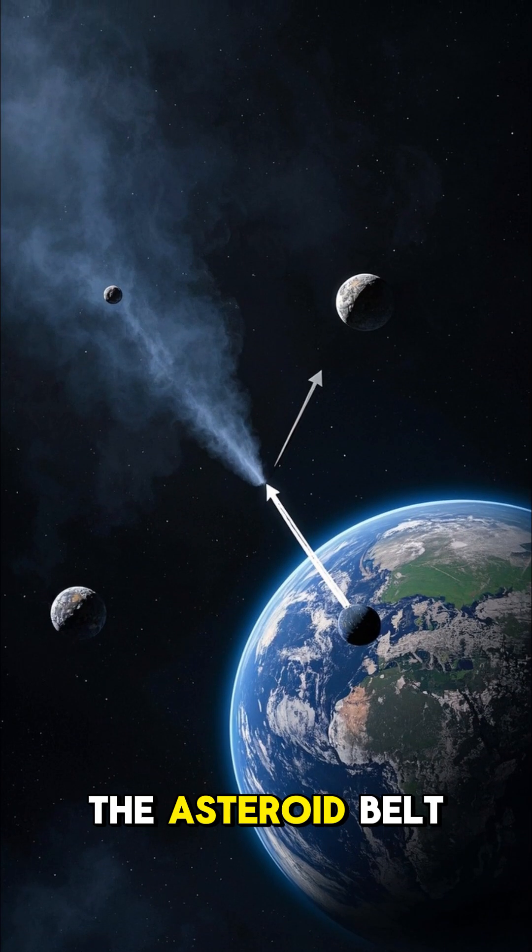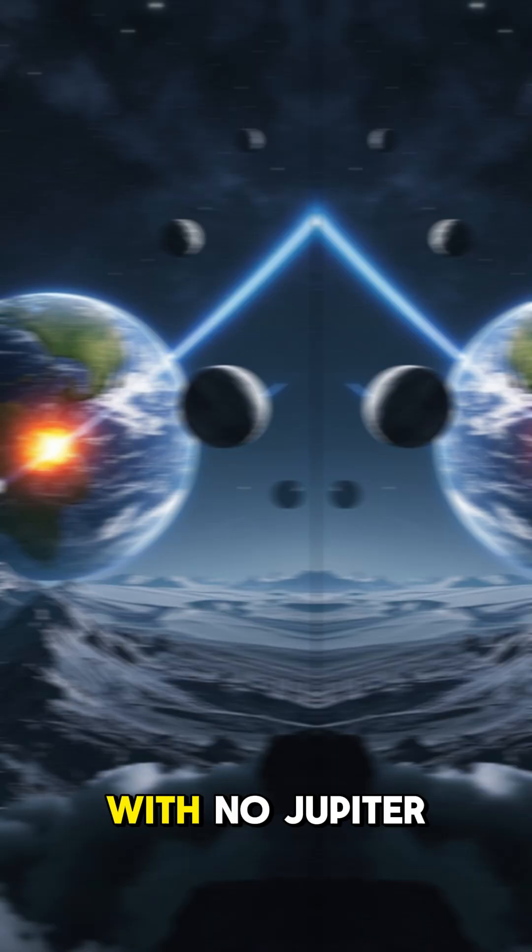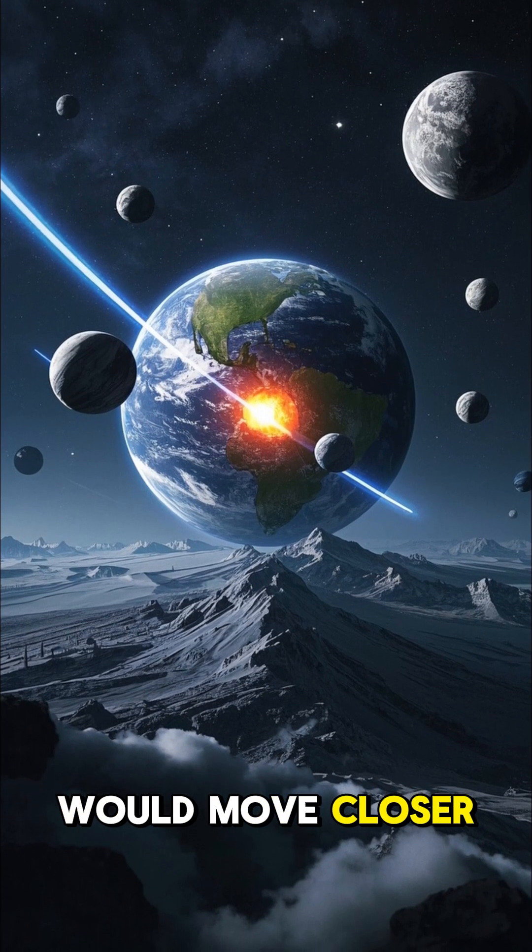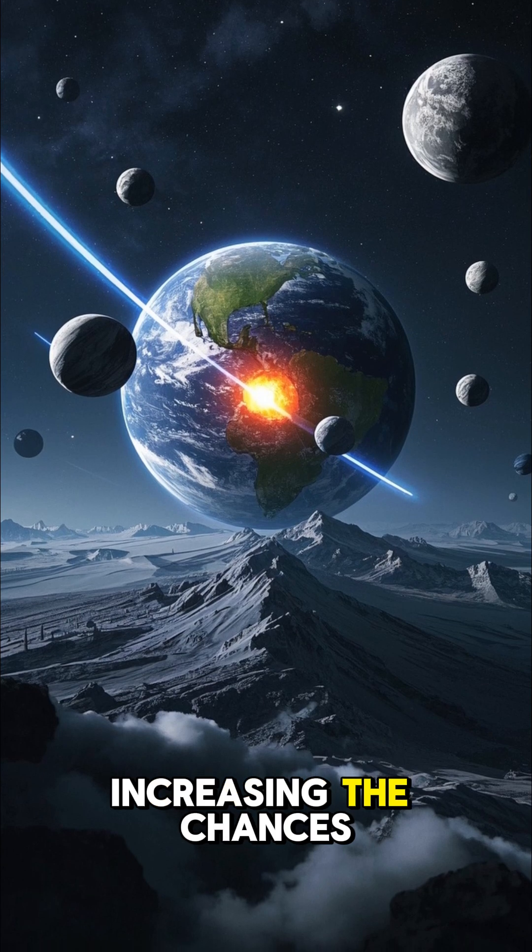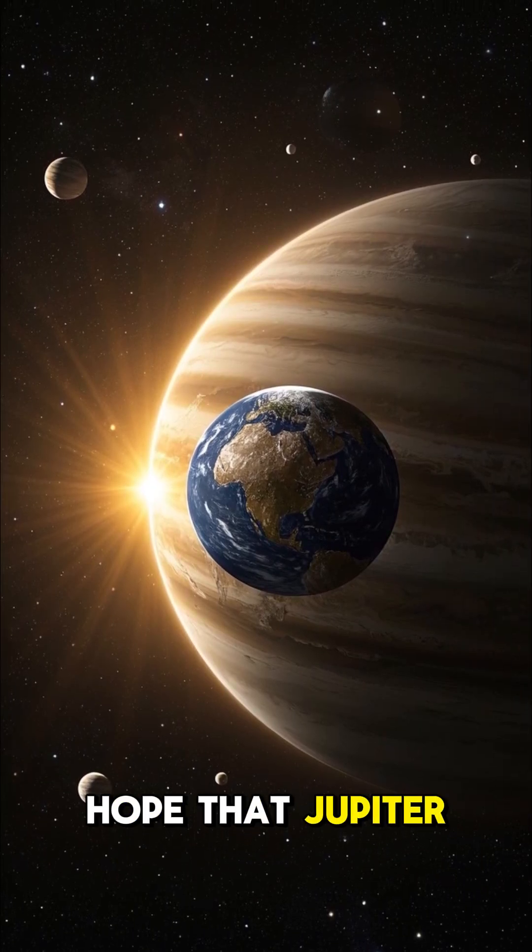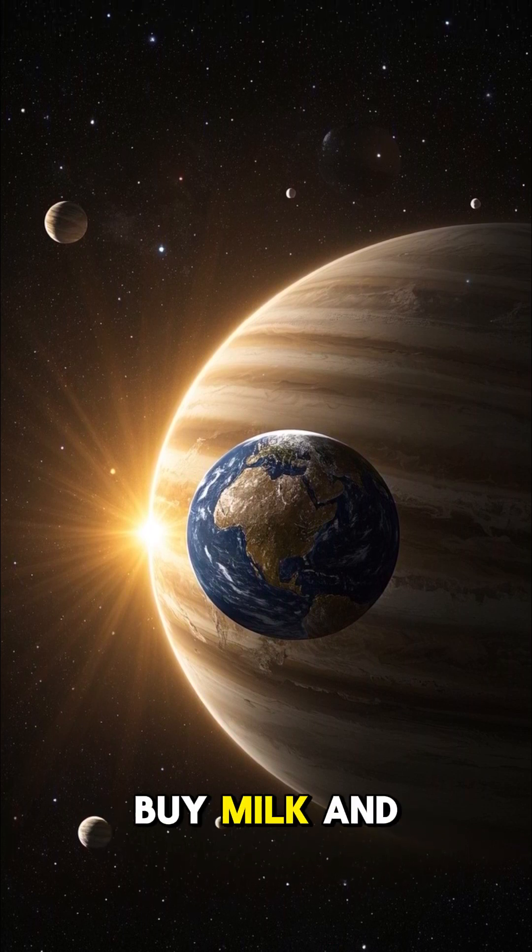Number four, the asteroid belt between Mars and Jupiter would get much closer. With no Jupiter to hold it back, the asteroid belt would move closer to Earth, increasing the chances of an impact even further. So let's just hope that Jupiter doesn't stop protecting us anytime soon, not leaving to buy milk and never come back.